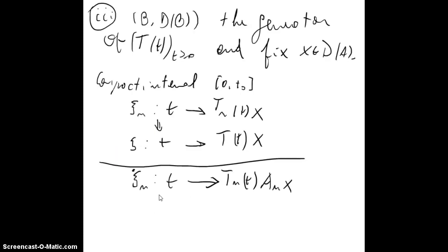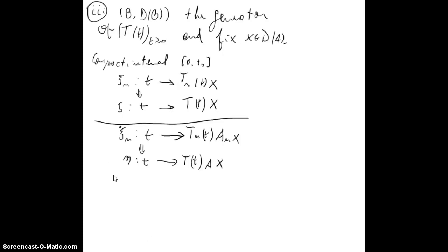So we know that this converges uniformly to, let's say, nu, the mapping nu, the mapping nu that takes t to T(t)Ax. This somehow implies differentiability of psi, where psi point of 0 is equal to nu of 0.